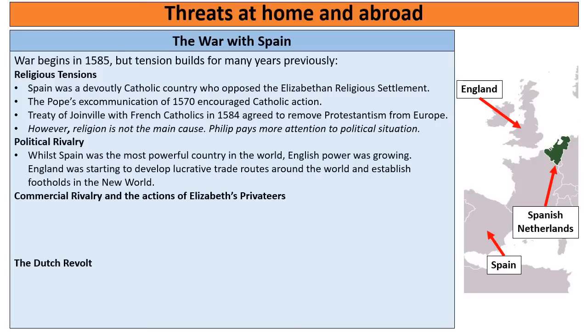Part of it is political rivalry. Spain was the most powerful country in the world but English power was growing. England was starting to develop lucrative trade routes around the world — in Russia, West Africa, North America, even around the Cape of Good Hope to India. This beginning of international power and prestige for England was a threat to Spain's power, and the easiest way for Spain to maintain their power was to try and crush England.